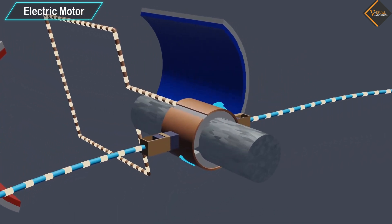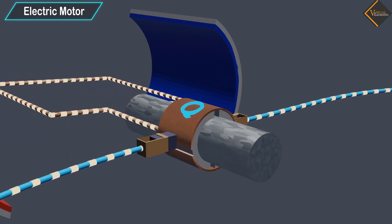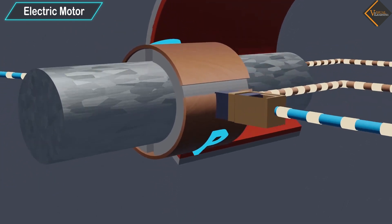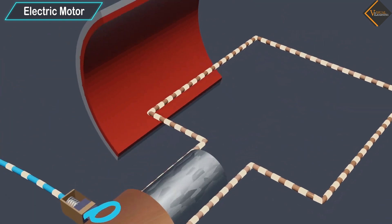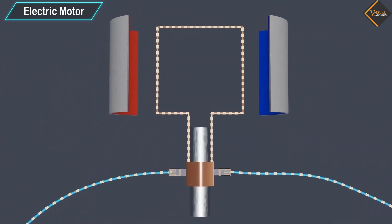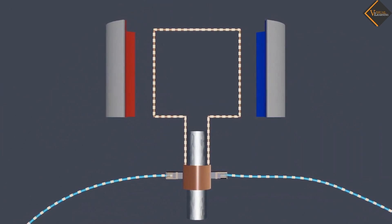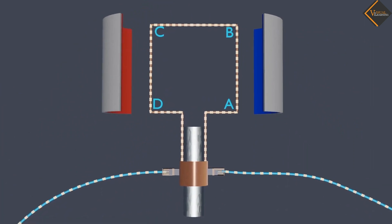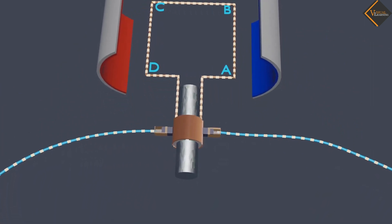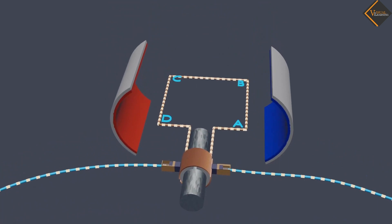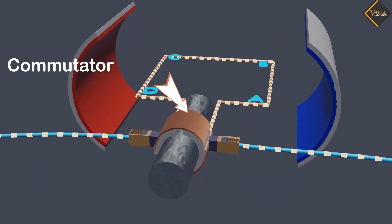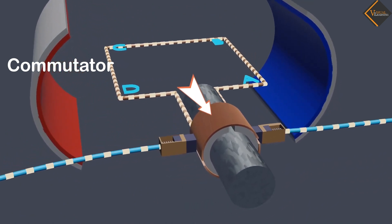At half rotation, Q makes contact with the brush X and P makes contact with brush Y. In this scenario, the current in the coil gets reversed and flows along the path DCBA. A device that reverses the direction of flow of current through a circuit is called a commutator. In electric motors, the split ring acts as a commutator.